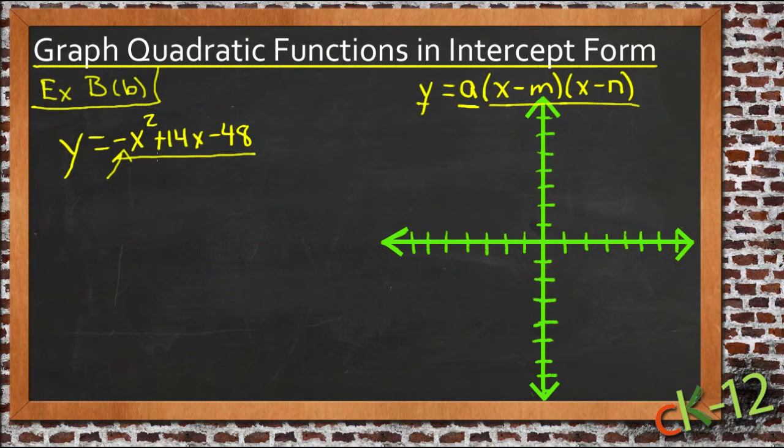I'm going to just pull that out of all three of these terms which would give us negative 1 times x squared minus 14x plus 48. You can see that if I just multiplied all those back out, we'd end it back where we started.